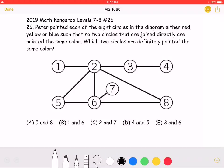Which two circles are definitely painted the same color? A. 5 and 8, B. 1 and 6, C. 2 and 7, D. 4 and 5, or E. 3 and 6.